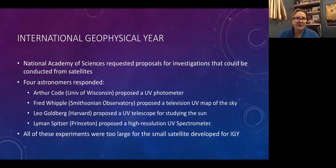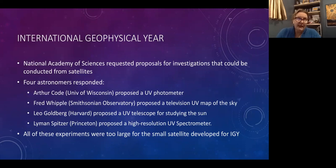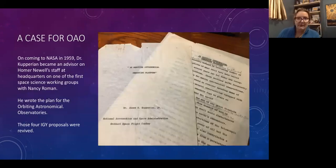As part of the IGY year, the National Academy of Sciences put out a request for proposals for experiments that could be conducted on satellites in orbit. They received four responses — Code and Whipple, Goldberg and Spitzer — but what they were planning was too large for Explorer-type rockets, so they needed a larger platform. After my dad was at NASA, he started working on one of the first working groups with Nancy Roman, and he wrote the plan for the Orbiting Astronomical Observatories.